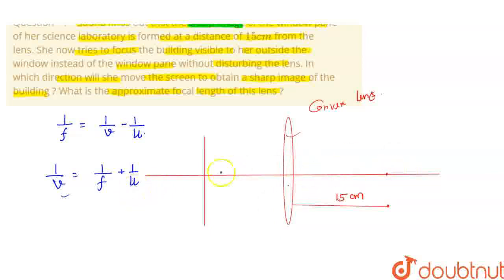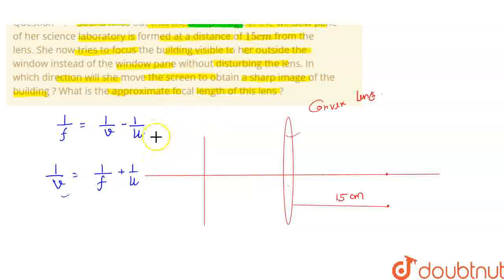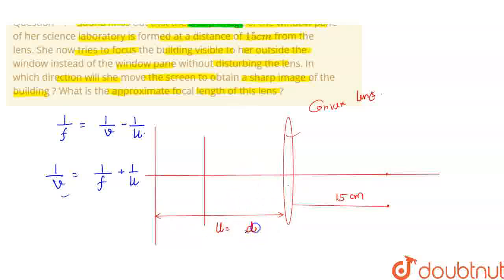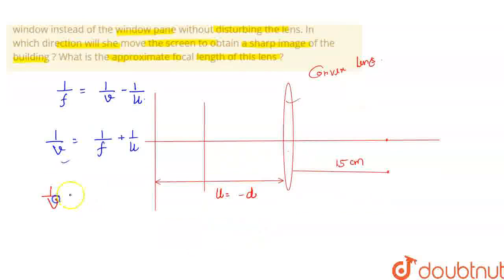The image distance from the lens and the object distance from the lens — let's suppose now we try to focus the building visible to her outside the window instead of the window pen, without disturbing the lens. Let's suppose that this building is here. So here we have to see the image of this building. If we consider the distance from the lens, U is equal to minus D. So here we will see: 1/v = 1/f minus 1/D.